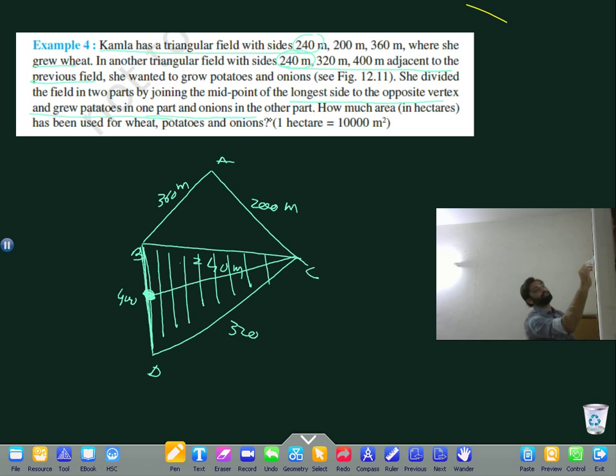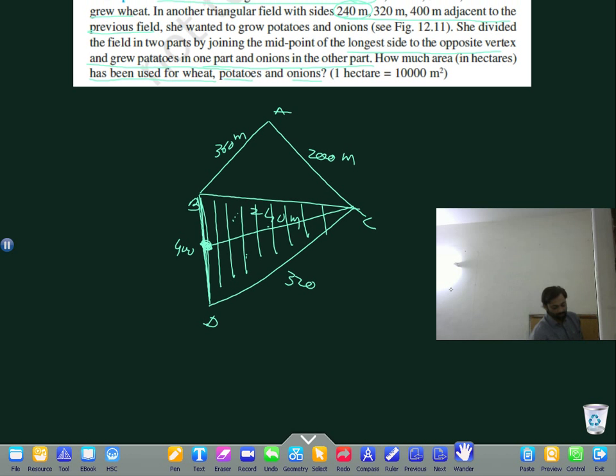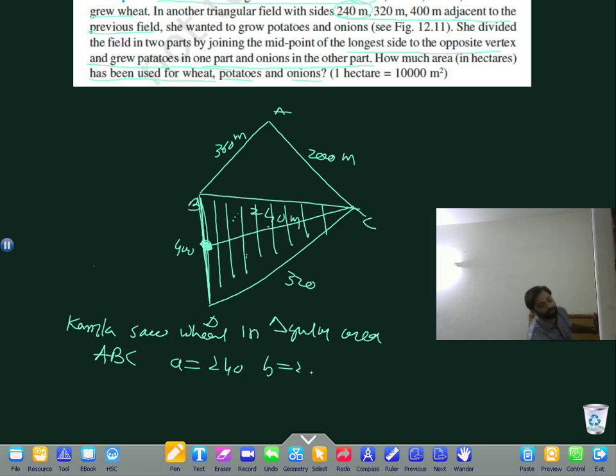How much area has been used for wheat, potato, and onion? We have to give different measurements. First, wheat will be sown in the triangular area ABC, where a equals 240, b equals 200, and c equals 360.